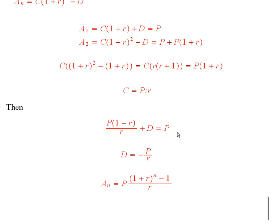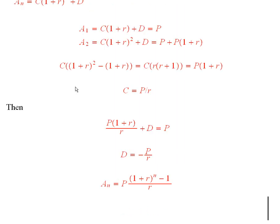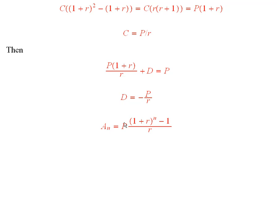That's the solution to this equation. And so if we go back and plug in the values for c and d that we just found in this recurrence relation, we see that a sub n is equal to p times this expression here: 1 plus r to the n minus 1 over r.